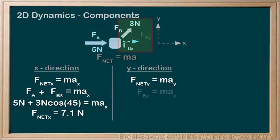So let's just look at FB. FB y, the component of FB in the y-direction, is 3 sin 45. And we get an F net y of 2.1 newtons.